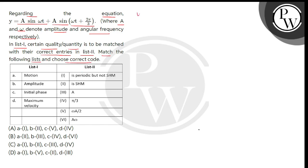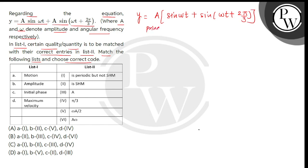Given है हमें एक equation y equal to a — यहां से a common ले लेते हैं — so this is sin omega t plus sin within bracket omega t plus 2 pi by 3. अब यहां देख सकते हैं कि यह दो SHMs को add किया हुआ है, it means हम यहां apply करेंगे the principle of superposition of SHMs.